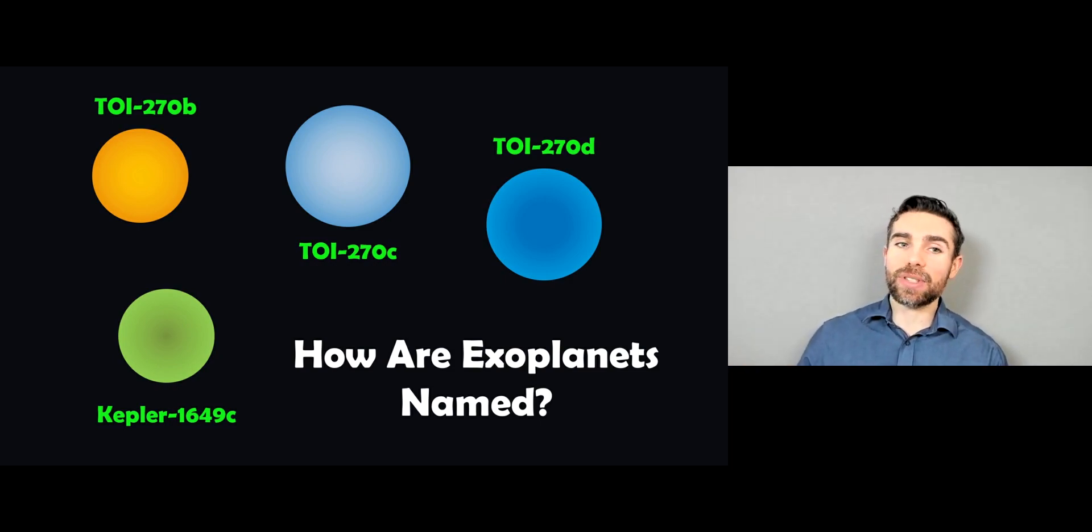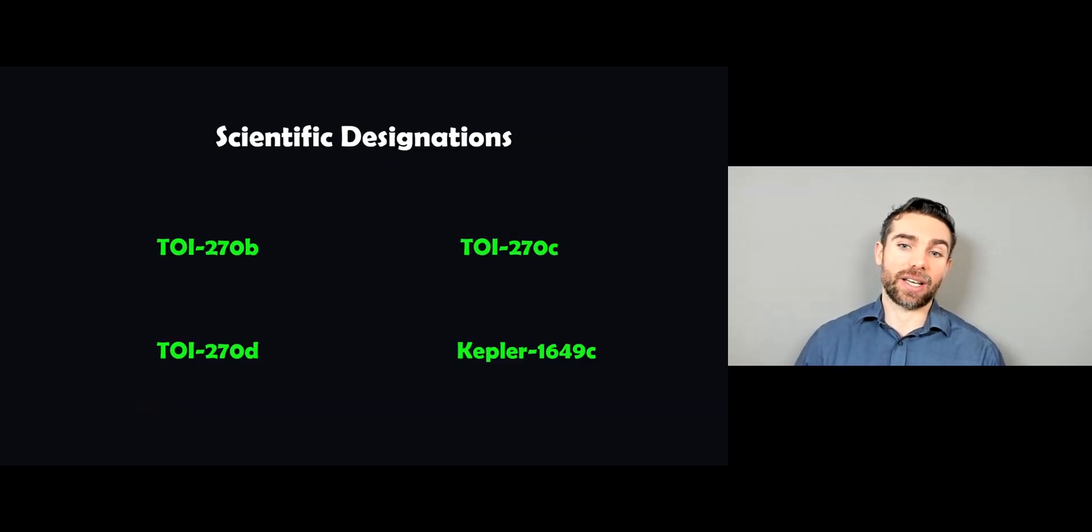And also the names they have are more like a code compared to the names we're more familiar with, with planets in our solar system, so like Earth, Mars, Venus. These are a collection of letters and numbers instead. So this is their scientific designations. And there's a few here of different planets.